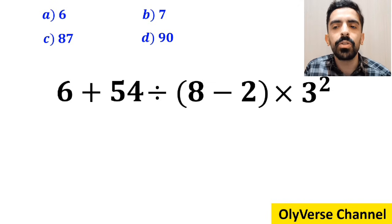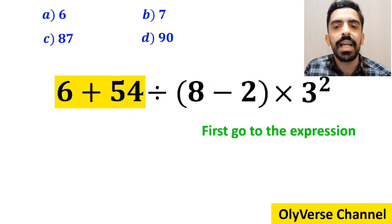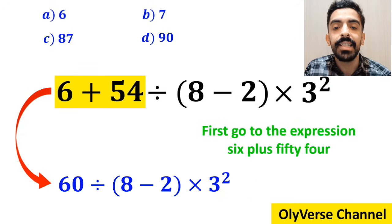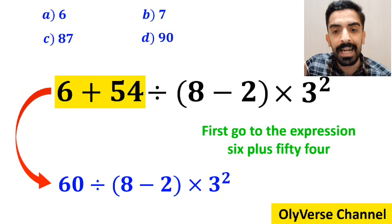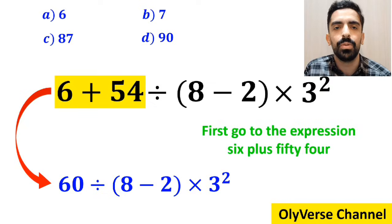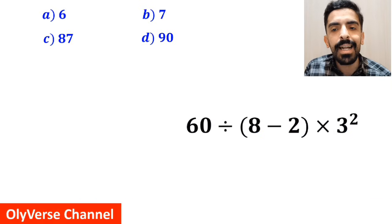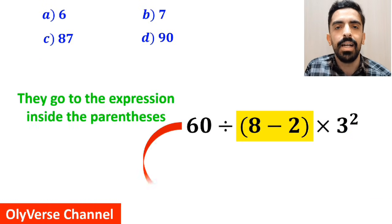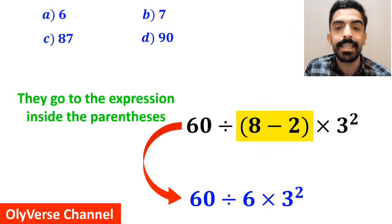Many people, to solve this question, first go to the expression 6 plus 54, and instead of this expression they write 60 divided by 8 minus 2 inside the parenthesis, then times 3 to the power of 2. In the next step, they go to the expression inside the parenthesis and simplify this to 60 divided by 6 times 3 to the power of 2.